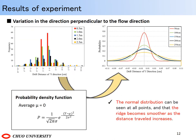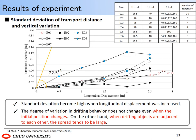The movement distance in the flow direction is summarized every 50cm in the flow distance and the movement distance perpendicular to the flow direction — that is, the movement distance in the y direction from the initial position. Since there was a negative bias due to the topography slope, we created a probability distribution using the probability density function with the average set to 0. The normal distribution can be seen at all points and the ridge becomes smoother as the distance traveled increases. The horizontal axis is the movement distance in the flow direction and the vertical axis is the standard deviation of the variation in the direction perpendicular to the flow direction. The yellow line is the spread angle of drifting objects shown by ASCE.